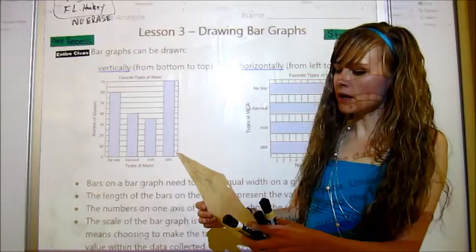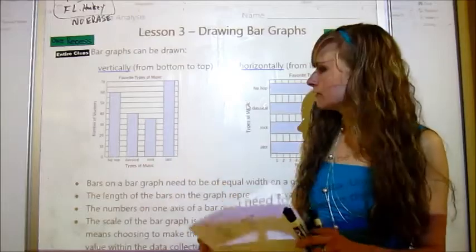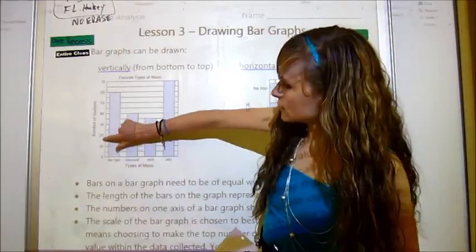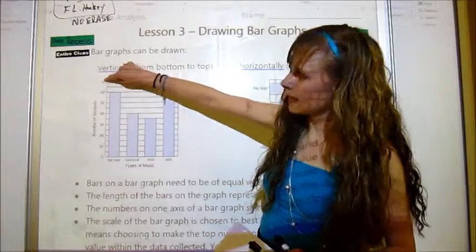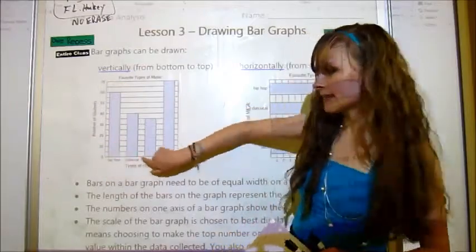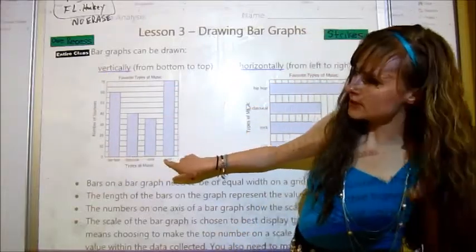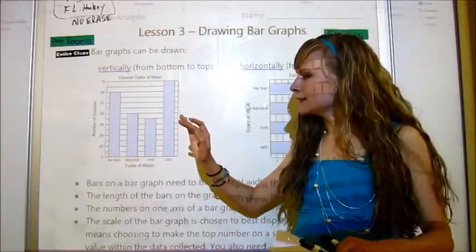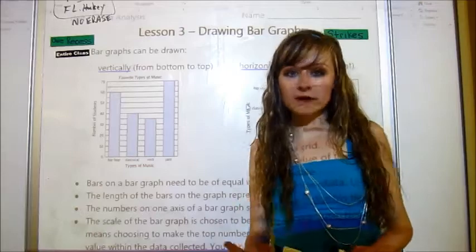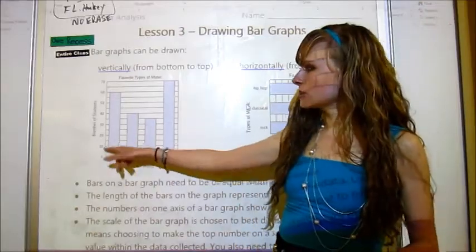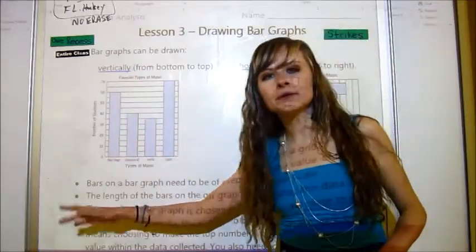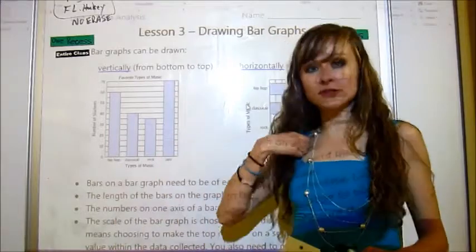You need to include the numbers on one axis of the bar graph to show the scale. So this would be the axis. And by the way, this is an axis and this is an axis. This would be the vertical axis and this would be the horizontal axis. But you need to have numbers on at least one of those because that shows you the number of people or the number of objects.